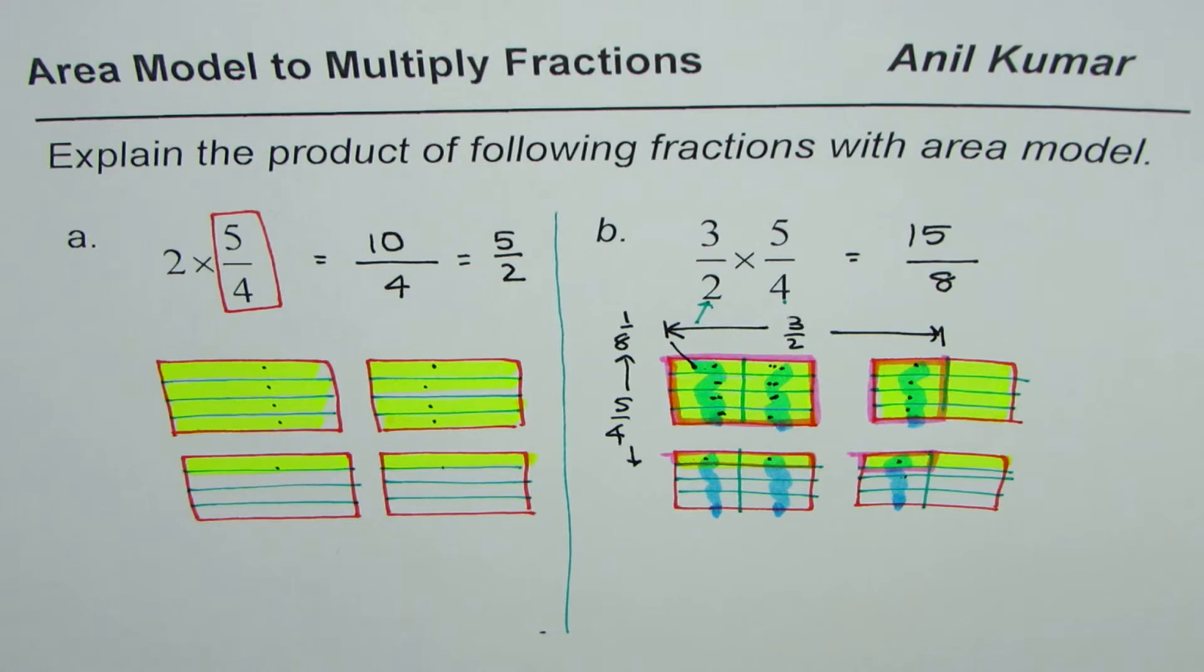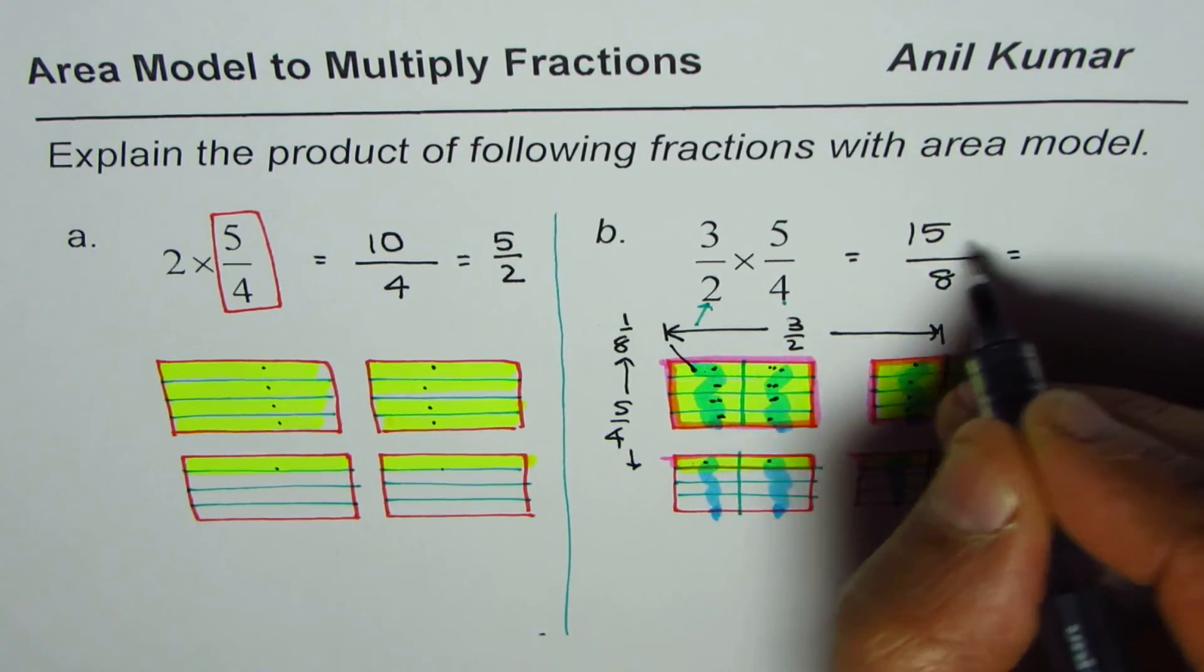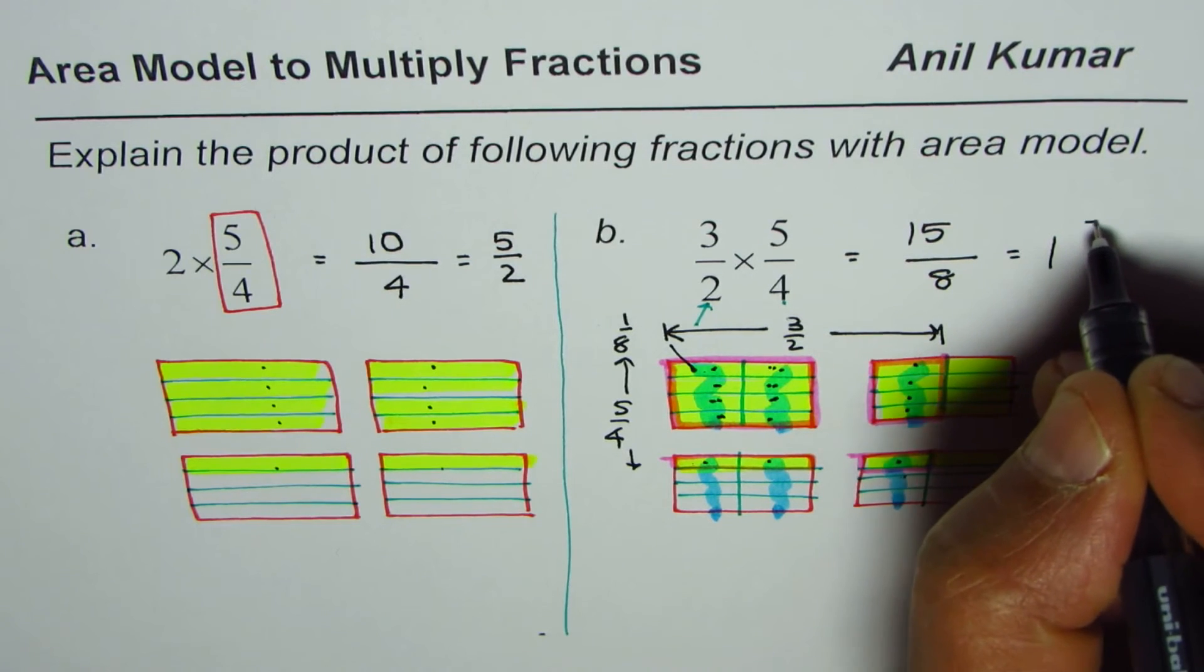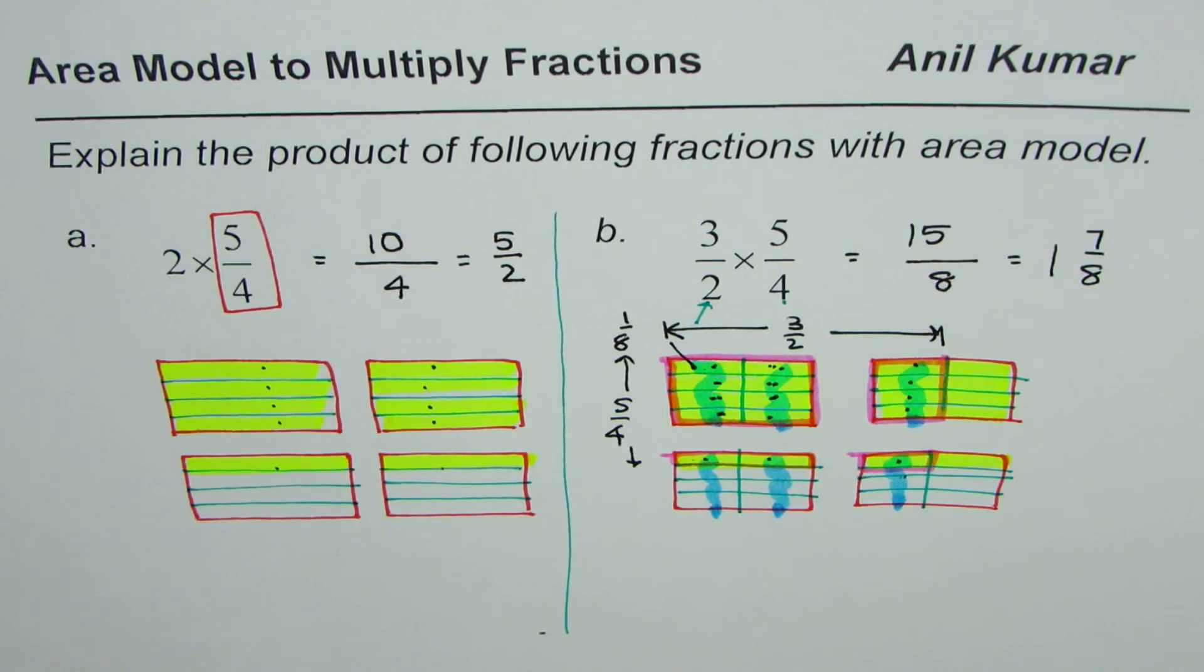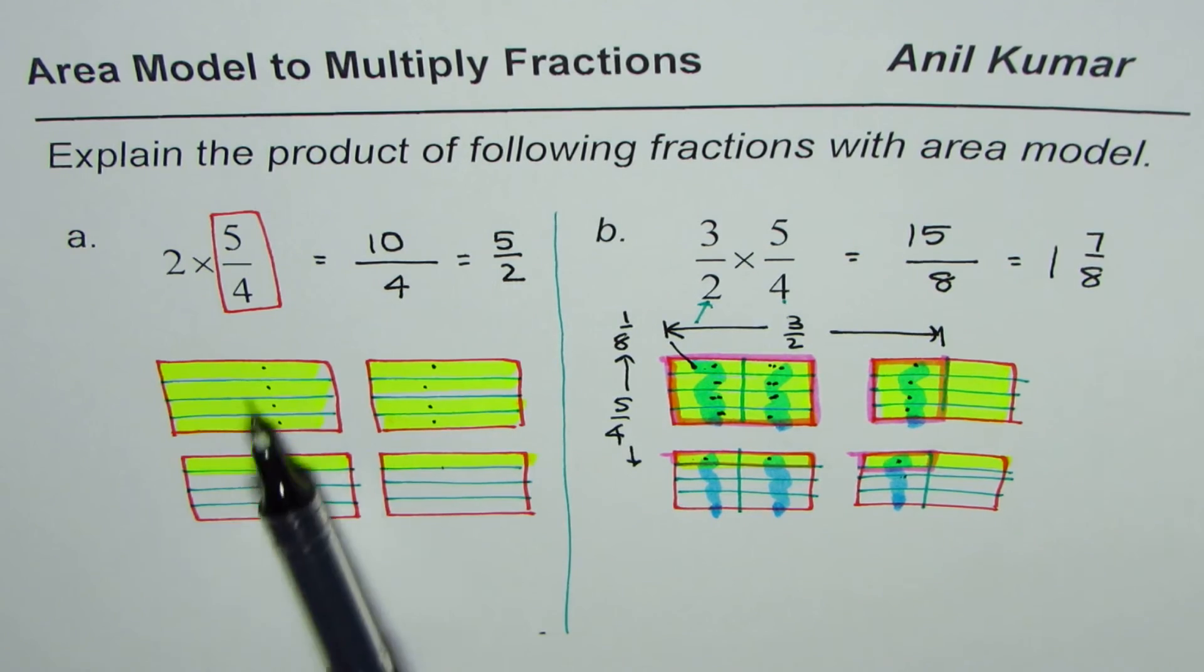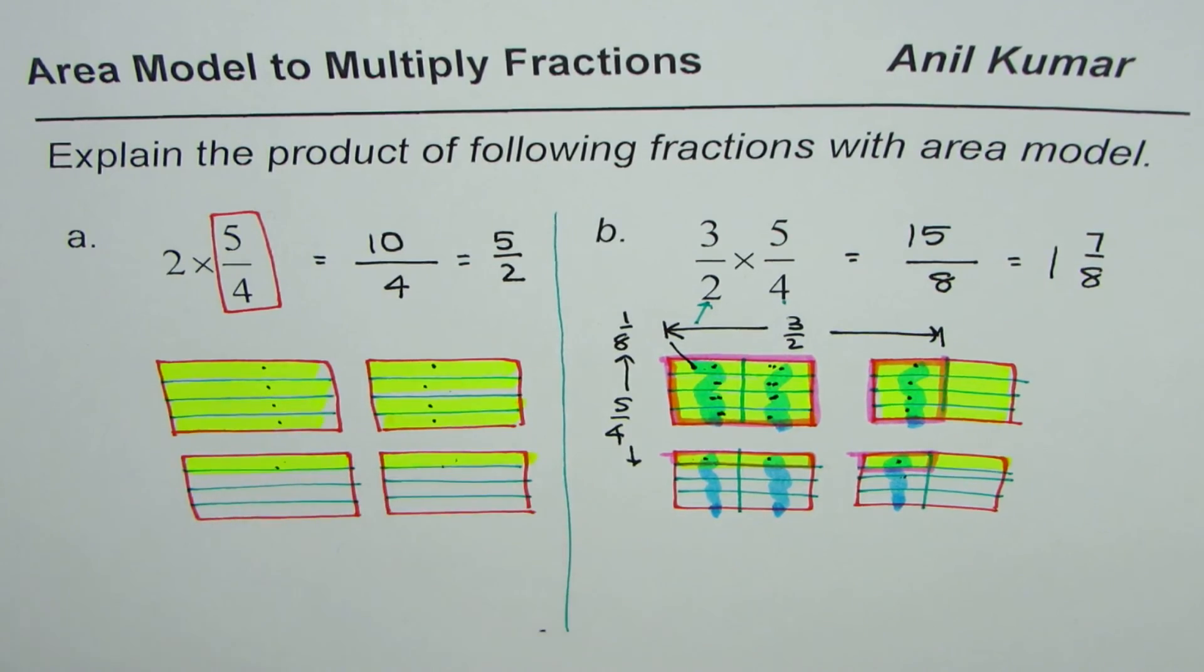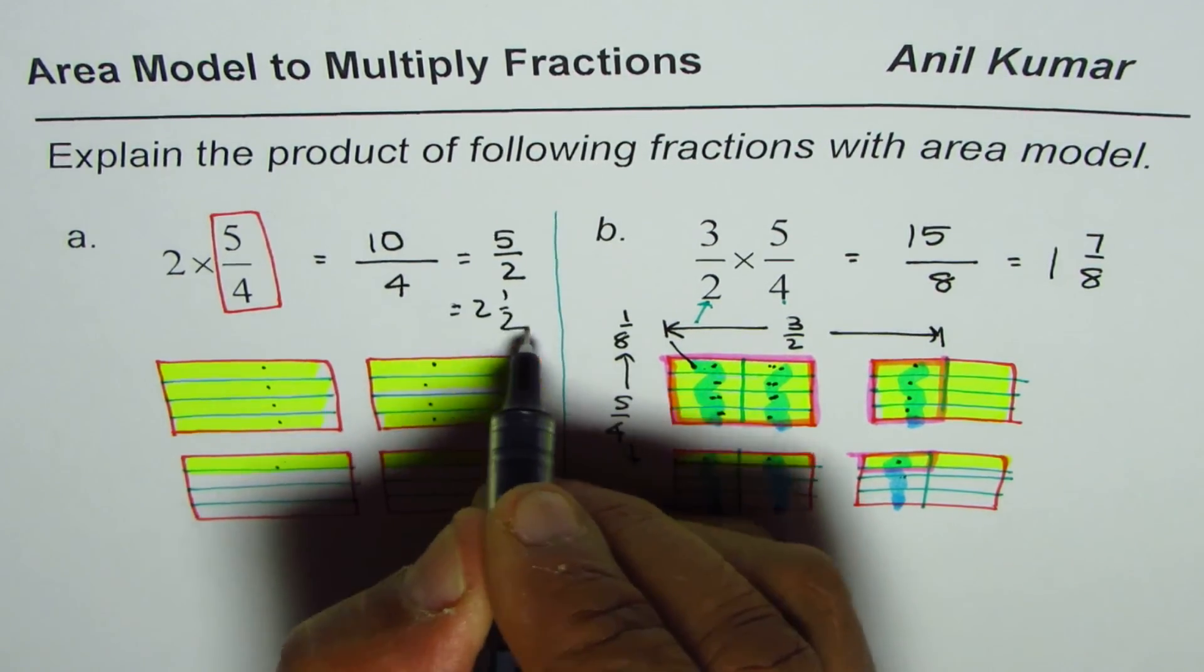So that is how you could represent the product of improper fractions and find the result using area model. As an exercise, you can convert this to mixed numbers. So 8 times 2 is 16. That means 1 less. So it is 1 whole 7 over 8. Similarly, you could write this as 2 and 1 half. So you could write this also as 2 whole, and this becomes half.